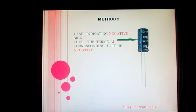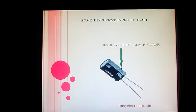There are also various other ways to represent the dash. On a gray line, there can be a patch or dash of gray color itself — this is another way of representing the negative sign on the electrolytic capacitor.